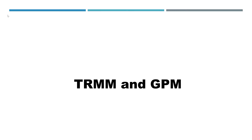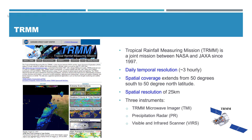The first one, TRMM, has stopped operation, and the second one, GPM, has been recently launched and replaces TRMM. So, what is TRMM? TRMM is the Tropical Rainfall Measuring Mission, an acronym, which is a joint mission by NASA and JAXA, the Japanese version of NASA, since 1997.